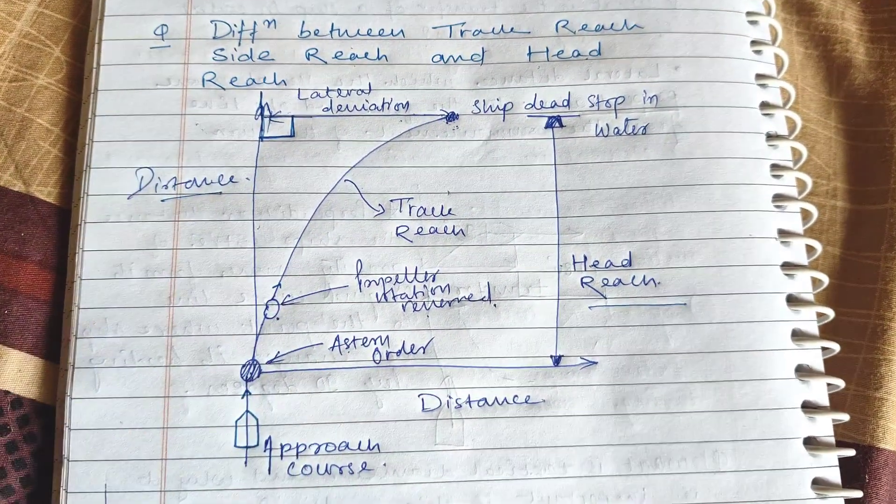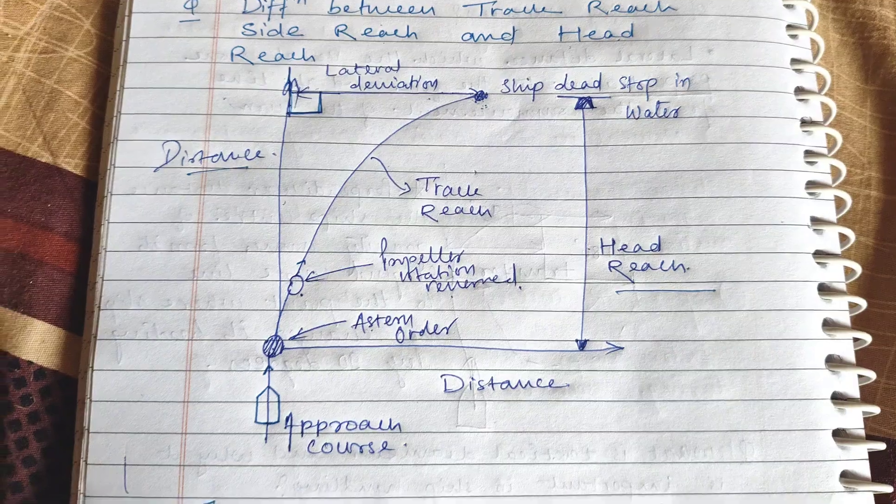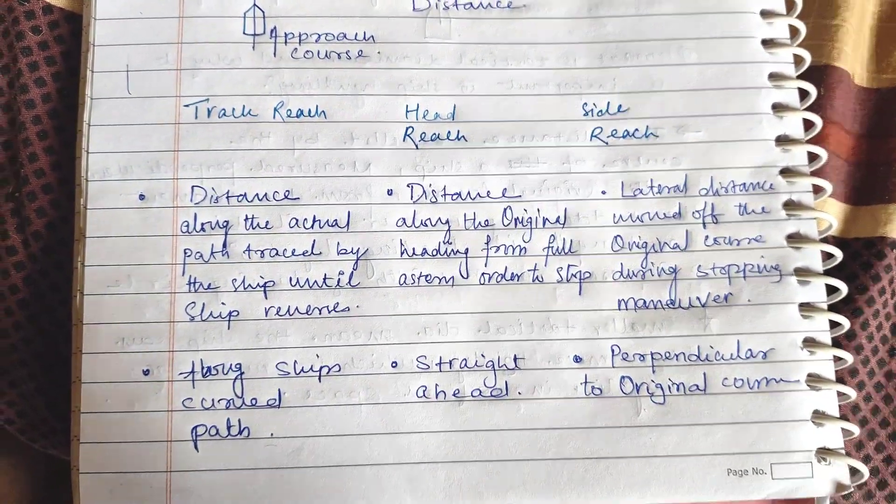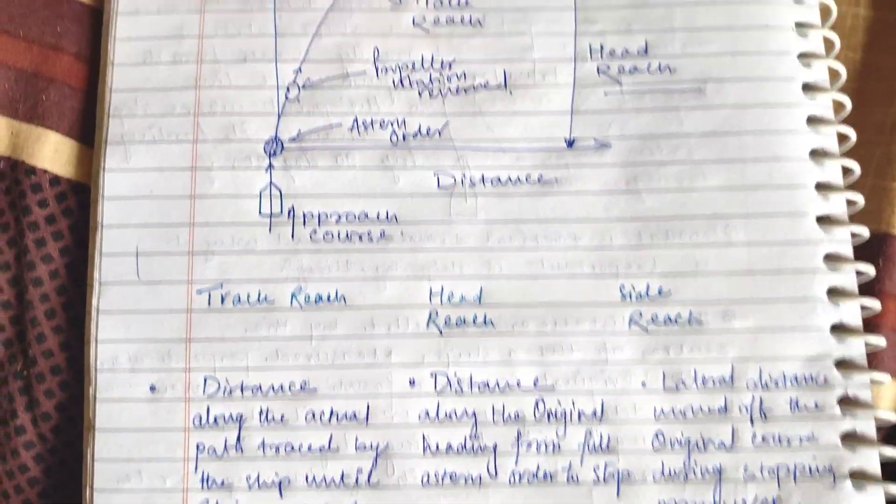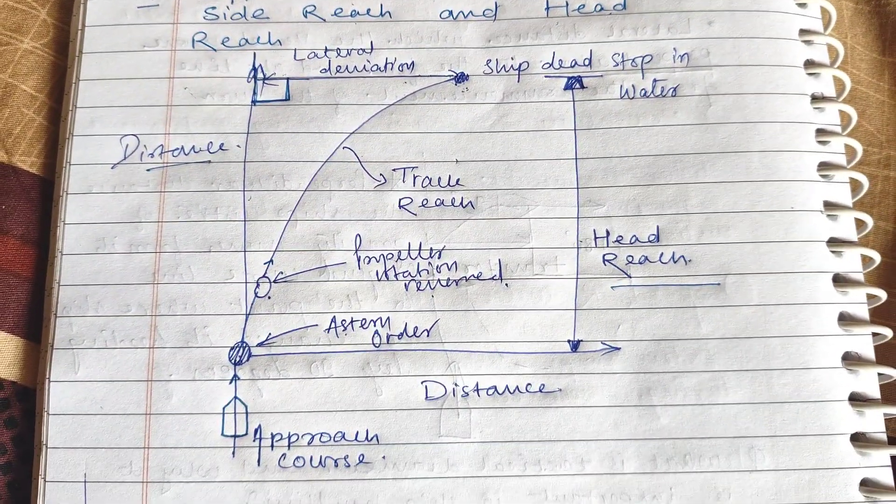This is perpendicular to the original course. So this is the difference between track reach, head reach, and side reach. Hope you liked it. Thank you.